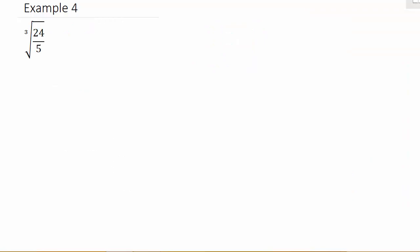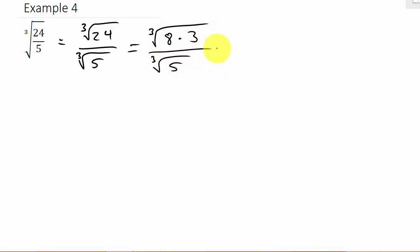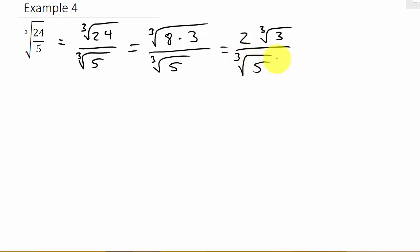Here we have the cube root of 24 over 5. First, let's split this up: cube root of 24 over the cube root of 5. Before I rationalize the denominator, let's see if I can simplify the radicals. Does 24 have a factor that's a perfect cube? Yes — I can rewrite 24 as 8 times 3, and 8 is a perfect cube. That would be over the cube root of 5. The cube root of 8 is 2; the cube root of 3 is not a perfect cube, so it has to stay underneath the radical, over the cube root of 5.